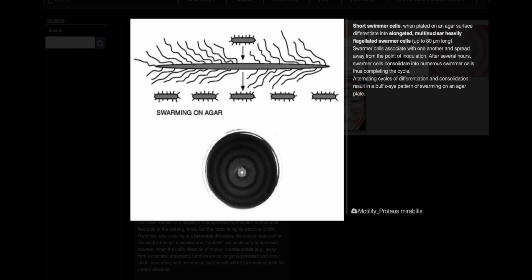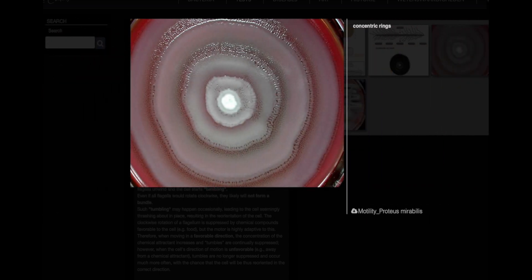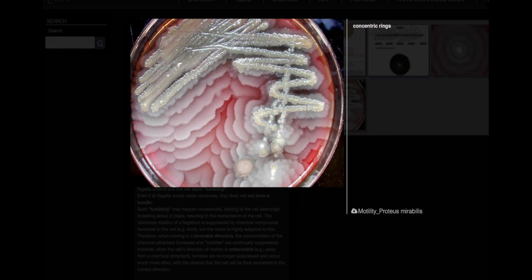After several hours, the swarmer cells consolidate back into numerous swimmer cells, completing the cycle. This alternating cycle of differentiation and consolidation creates the characteristic bullseye pattern seen in Proteus mirabilis swarming on agar plates.